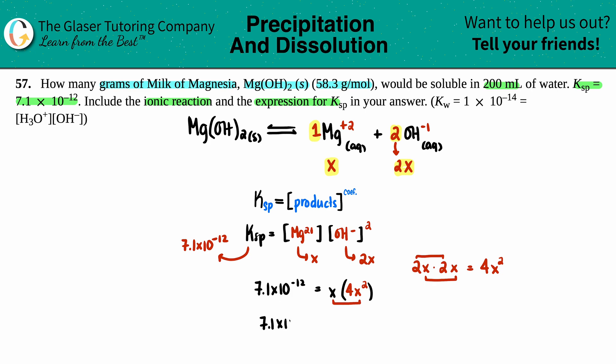You want to solve, so divide each side by four. Now we have 7.1 times 10 to the negative 12 divided by four, which equals 1.775 times 10 to the negative 12, and this equals x³.